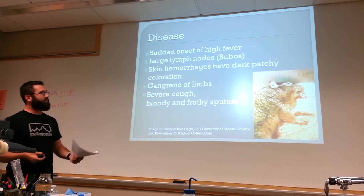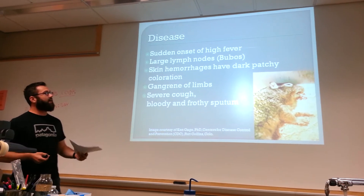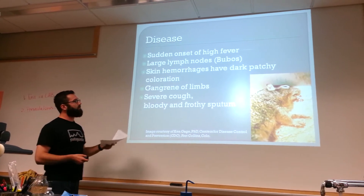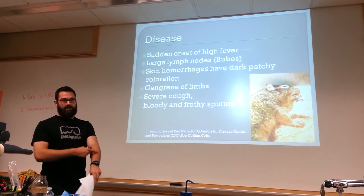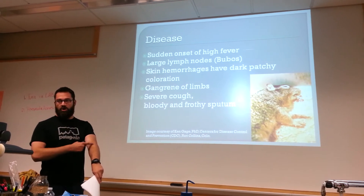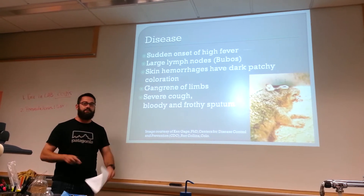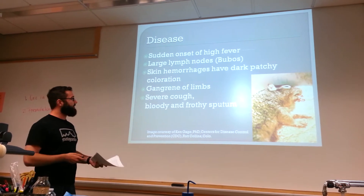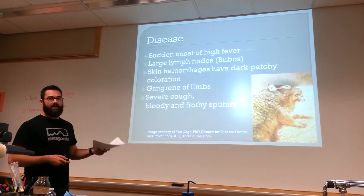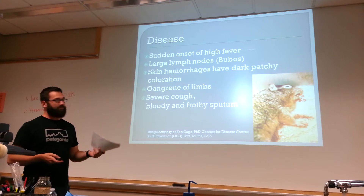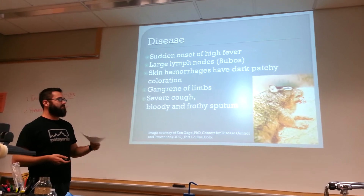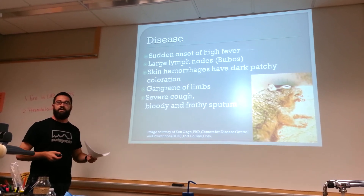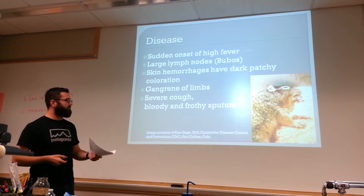The symptoms include a sudden onset of high fever, large lymph nodes — the bubos — skin hemorrhages, and large dark patches that form under the skin, giving it the term 'the Black Death,' which is what it was named in Europe. Eventually you can have gangrene of limbs, and in the case of lung infection — pneumonic plague — a severe cough with bloody and frothy sputum.